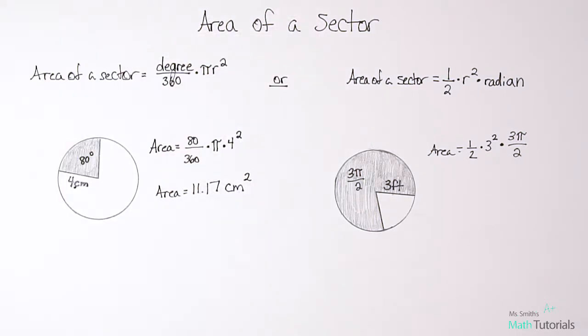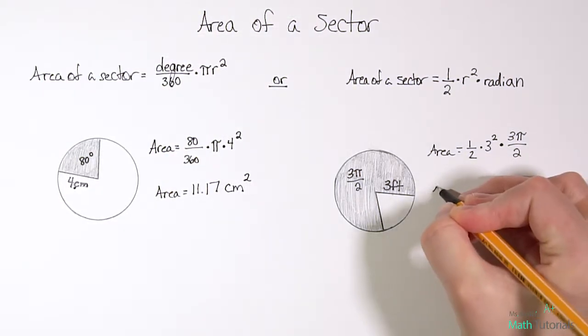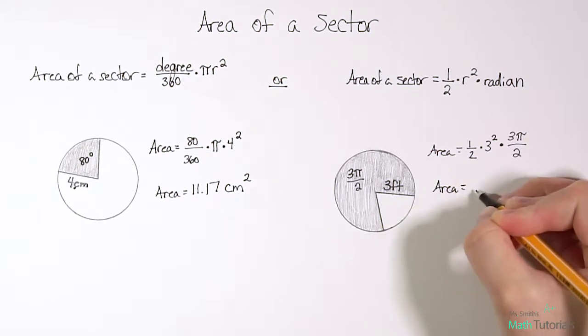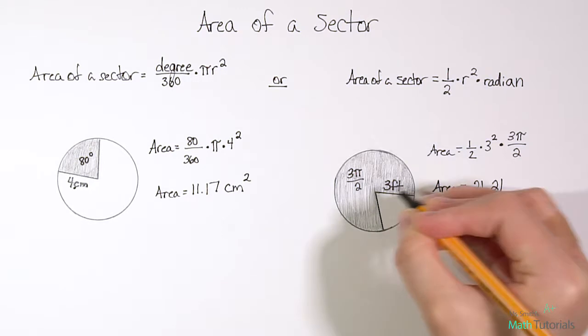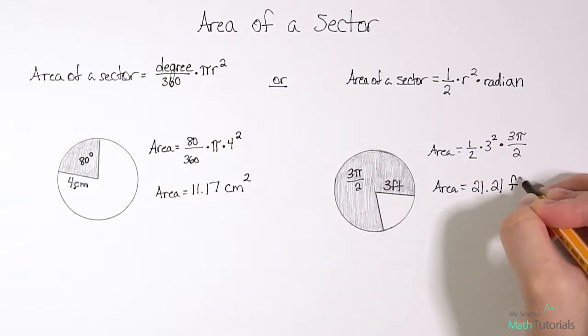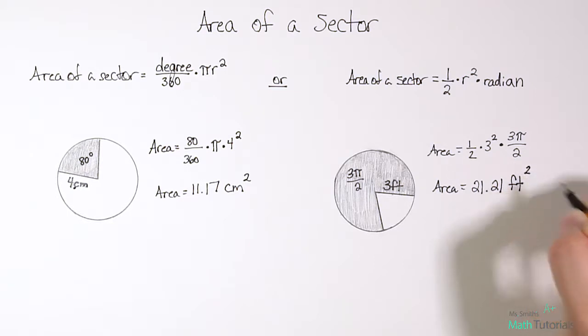So our area in this case, our area of this sector is 21.21. And remember, our units is feet, but we're finding area of a 2D shape, so it's feet squared.